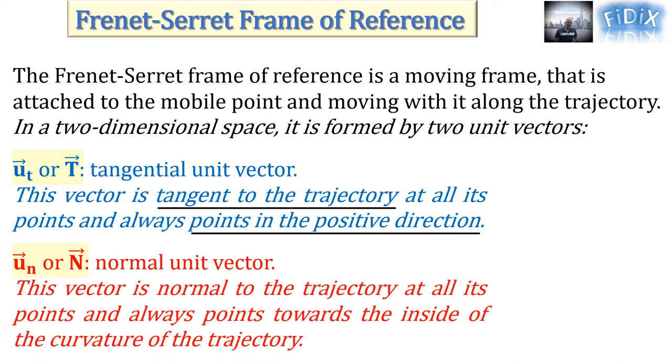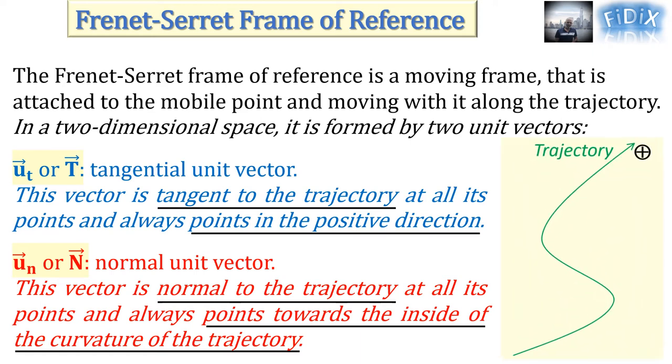U_N is a unit vector that is normal to the trajectory at all its points and always points towards the inside of the curvature of the trajectory. The figure shows the trajectory of the moving particle, the chosen positive direction, and the moving Frenet-Serret Frame of Reference.